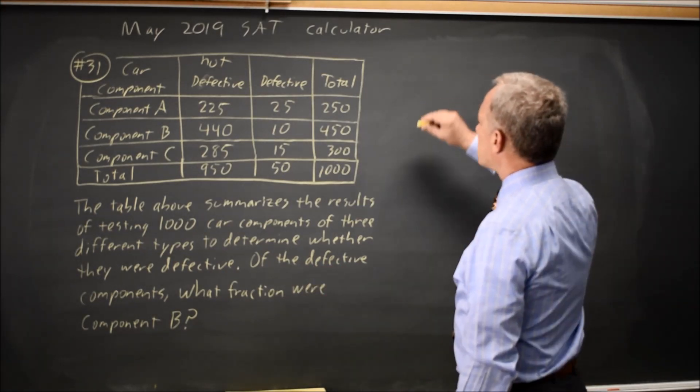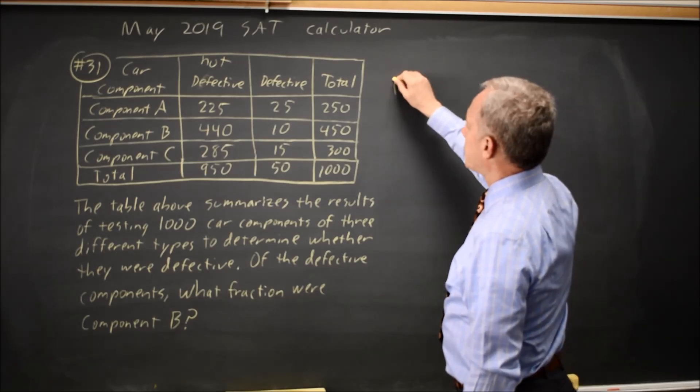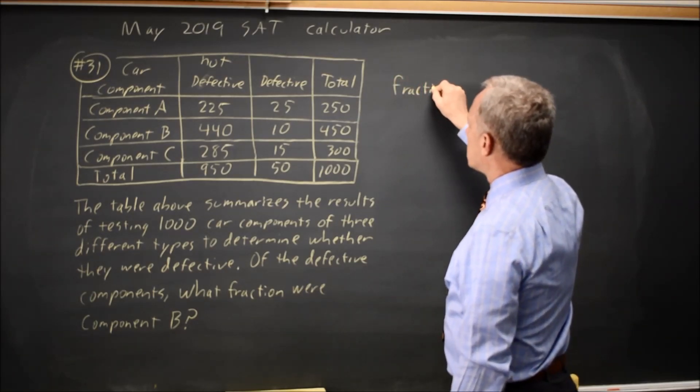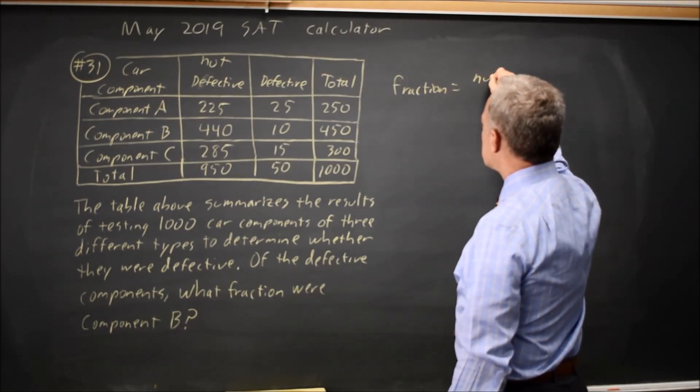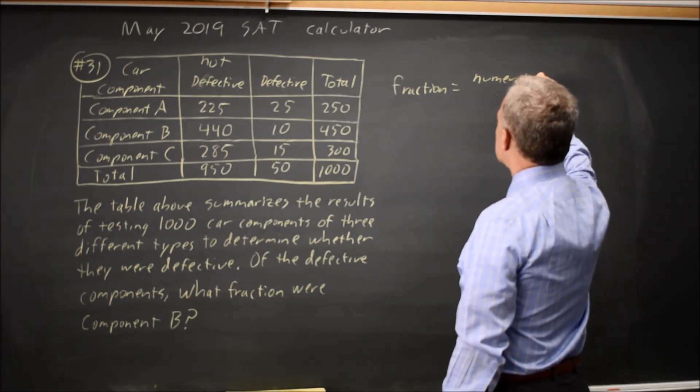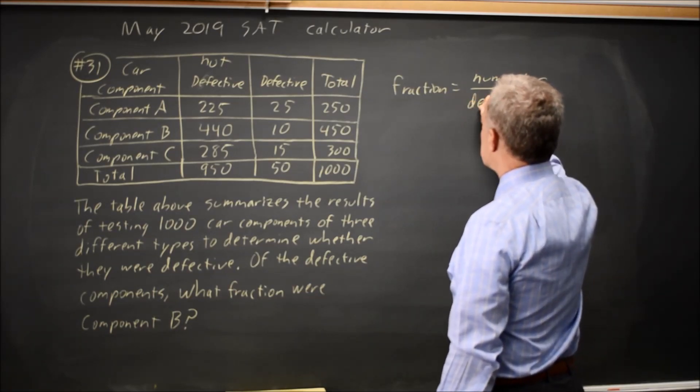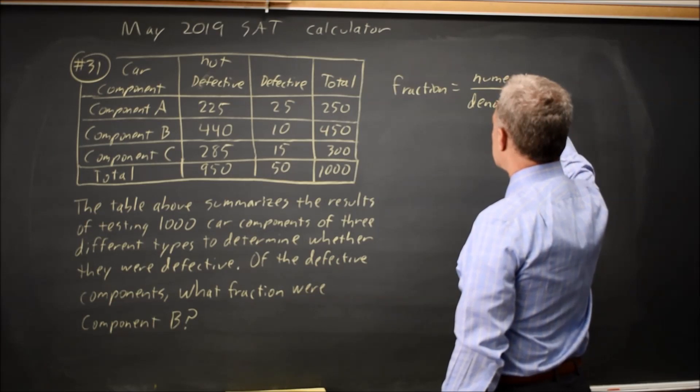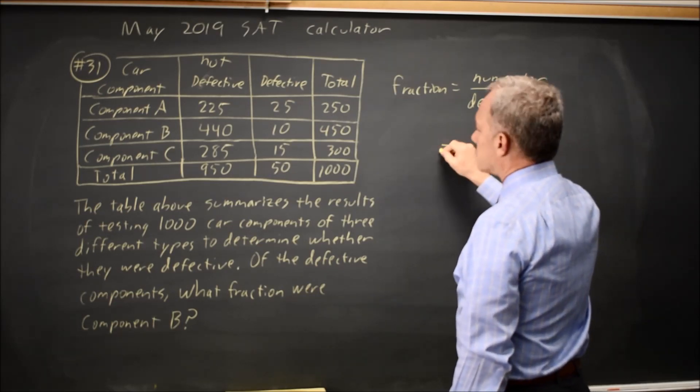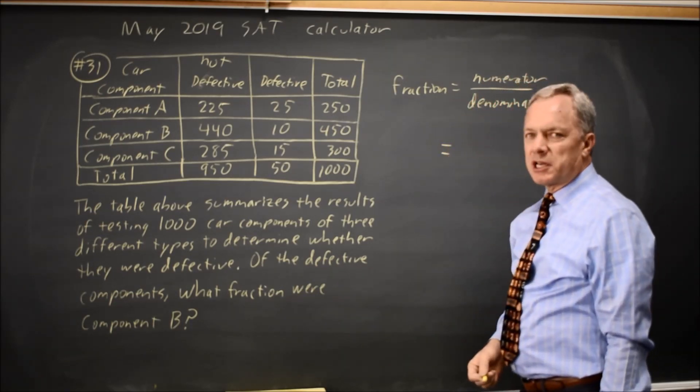When they're asking for a probability from a table or a fraction from the table, the fraction will be the numerator over a denominator where the denominator is all items that might have been selected.